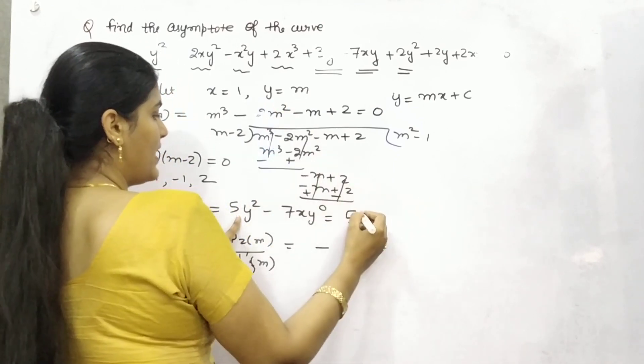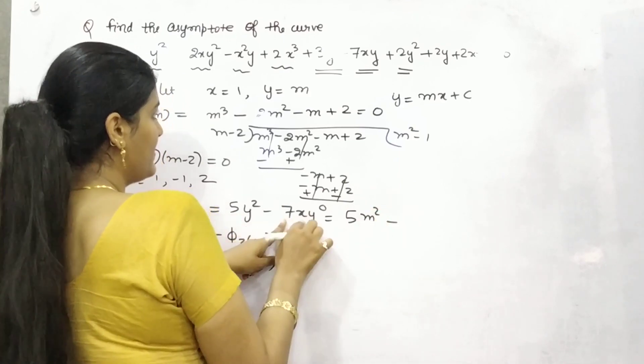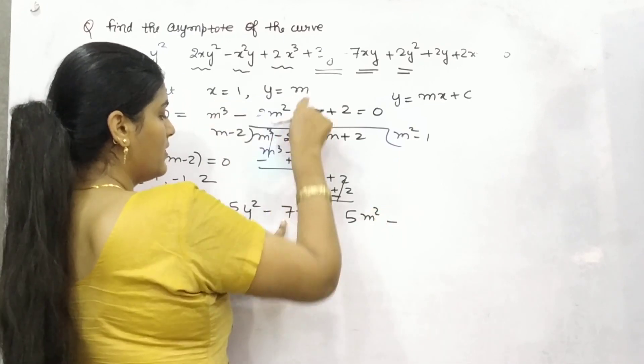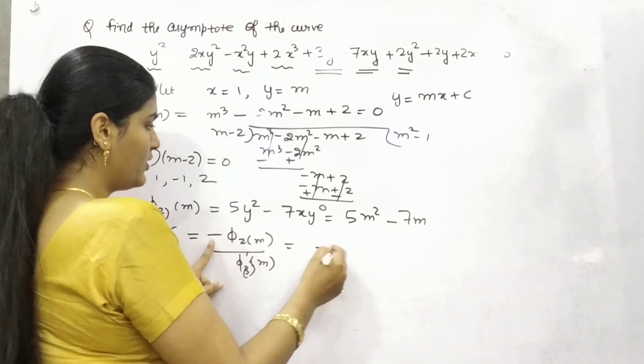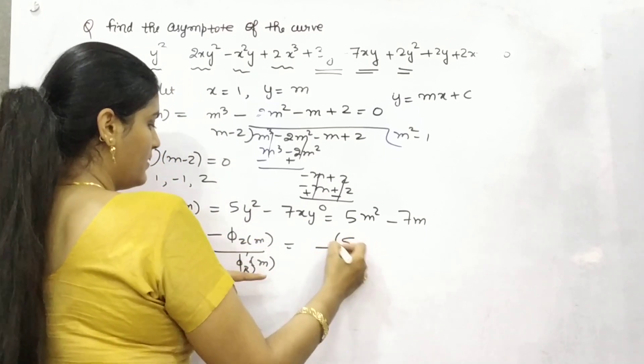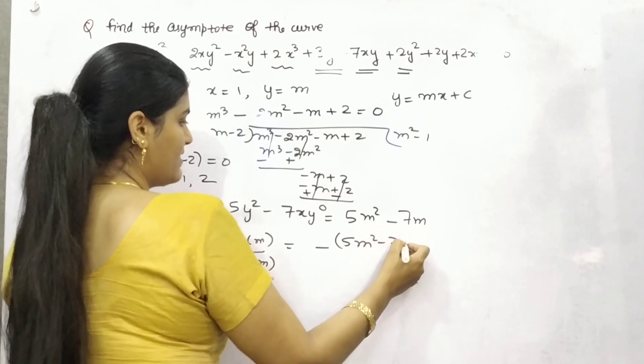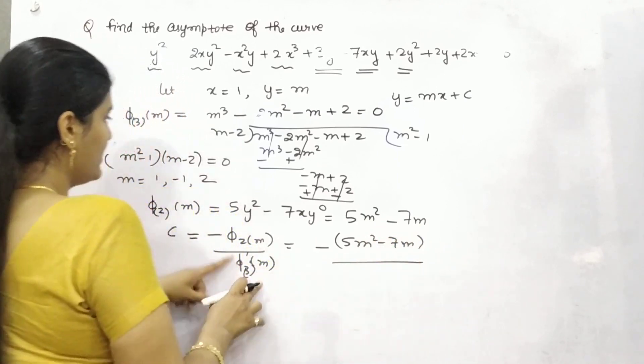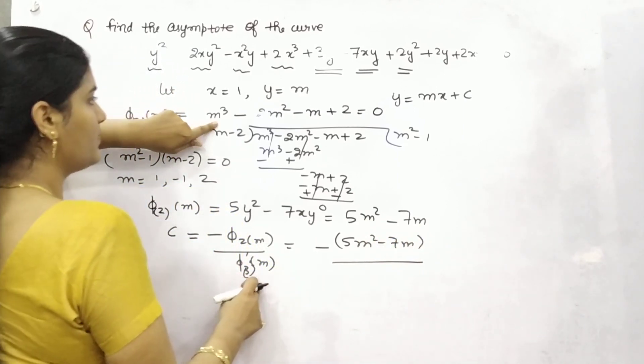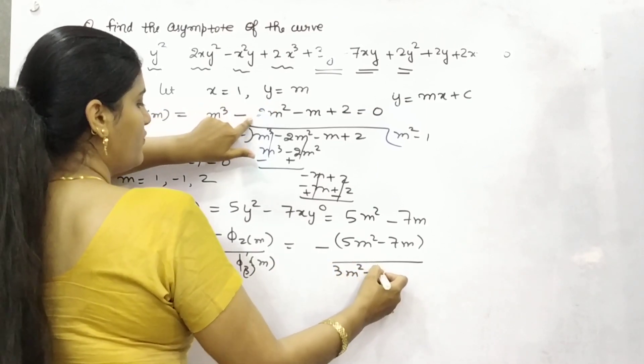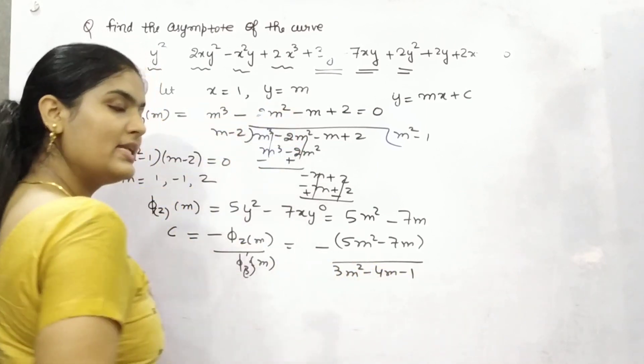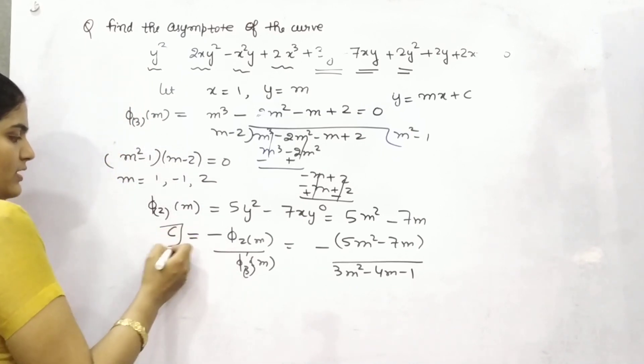Thereafter, now put the value, 5m square minus 7m and differentiation of this term. So 3m square minus 2 times 2, 4m minus 1. So now you have got your value of c.